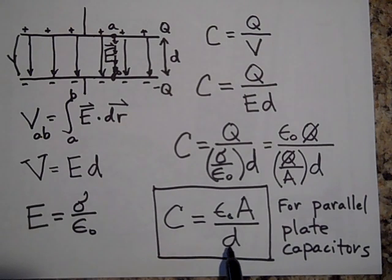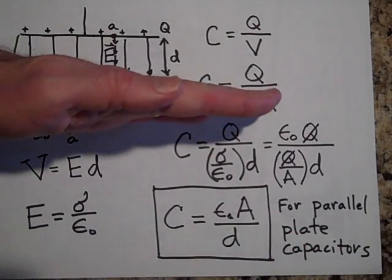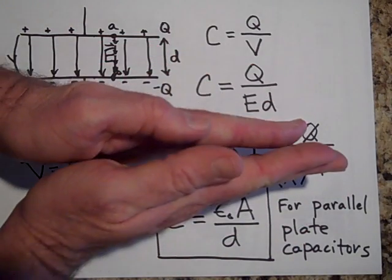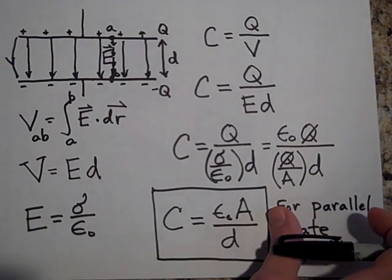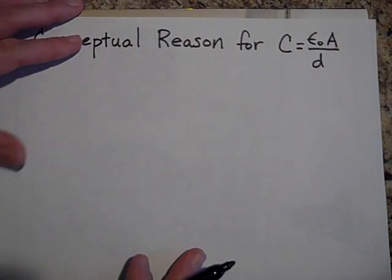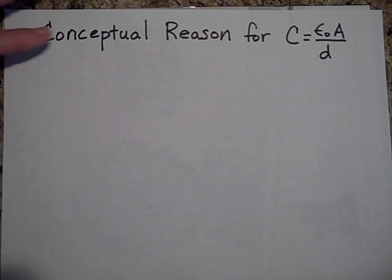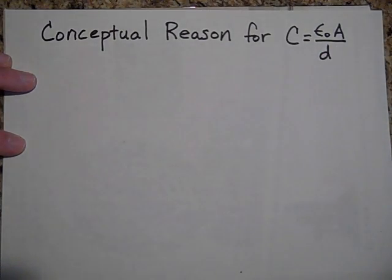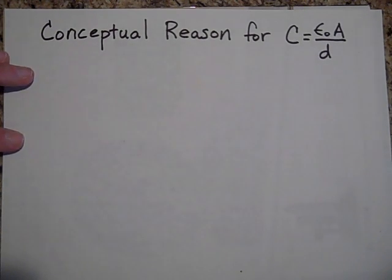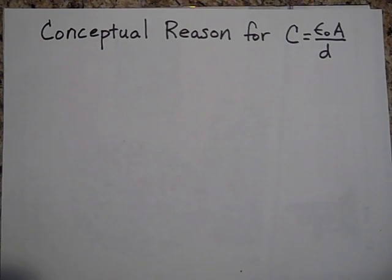Now the d, apparently if we get the plates closer together, so if they're this far apart and I get them closer together, somehow that increases the capacitance. Let me explain why. So I want to give you a conceptual reason for why the A is on top and the d is on the bottom of this formula. But to do that I think I'm going to go to a second video. So we'll do one more video on capacitance basics. All right, see you there.